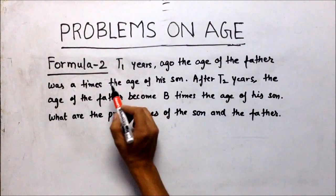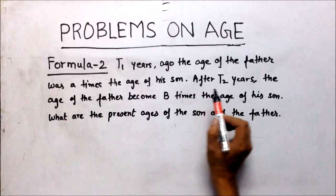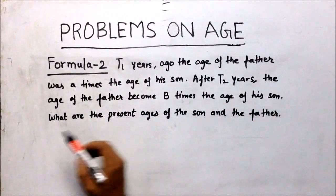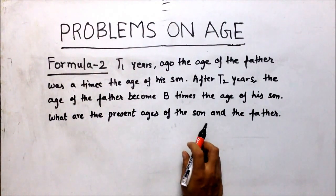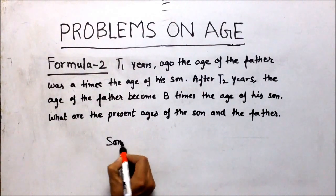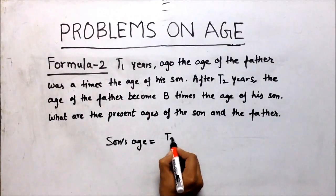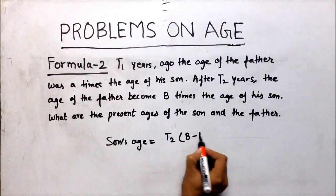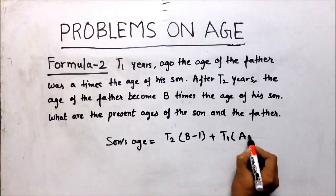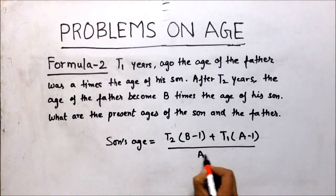Now Formula 2. T1 years ago, the age of the father was A times the age of his son. After T2 years, the age of the father becomes B times the age of his son. What are the present ages of the son and the father? For solving this type of question, we have a formula: son's age equals (T2 times (B minus 1) plus T1 times (A minus 1)) upon (A minus B).